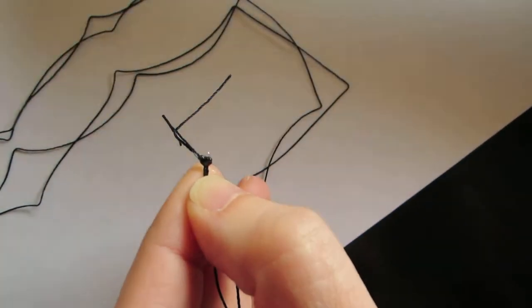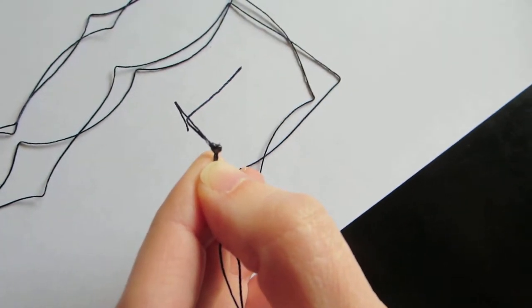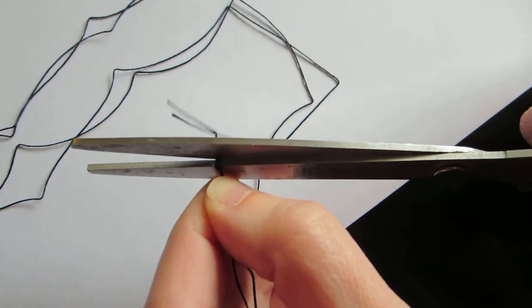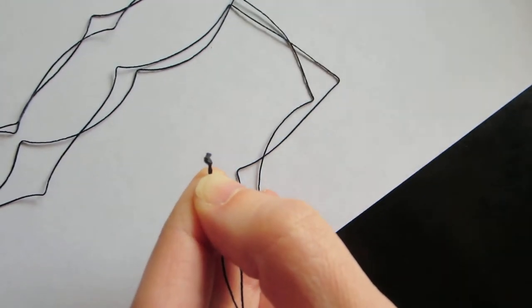Once we've done that, we're going to take our scissors and trim the tail on our knot right next to the knot so that we don't have any excess cord.